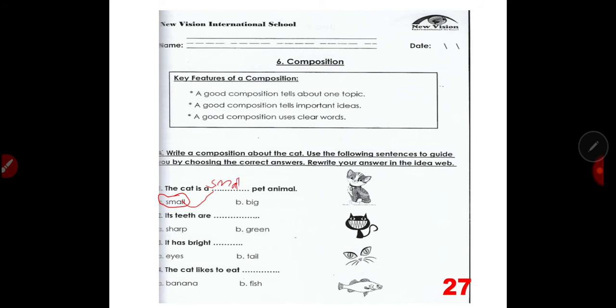Number 2, its teeth are sharp. Copy right here on the line. It has bright eyes. And then, the cat likes to eat what? Of course, fish. And then write it on the line. Once you are done with this page, you are going to copy them and then write it in idea web in page 28.